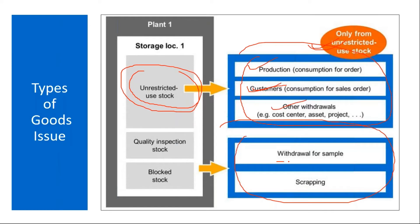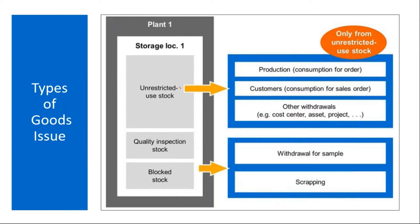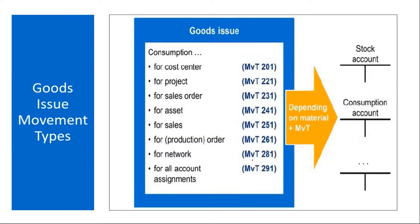For some cases, like withdrawal for sampling or withdrawal for scrapping, that can be done from the quality inspection stock or blocked stock. So these are the two types: with reference and without reference. Looking at the various movement types: goods issue for a cost center is movement type 201, and goods issue for a project is movement type 221.